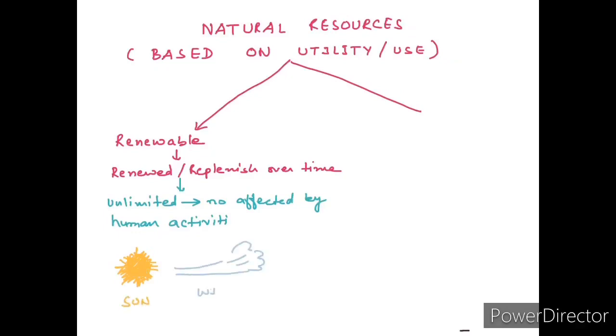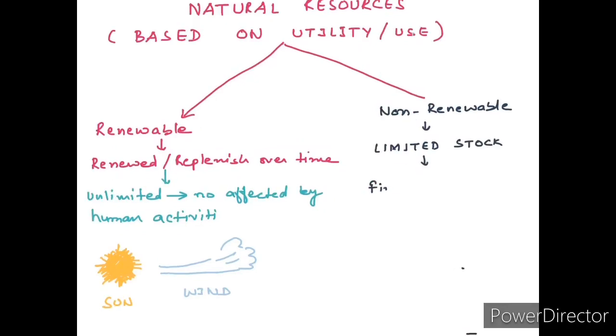Sunlight is an example of renewable resource. Wind energy is an example of renewable resource. Next we have non-renewable resources which are limited in stock, present in the environment. Over a period of time they get finished and it takes thousands of years to replenish.